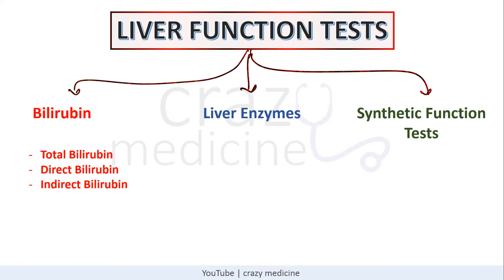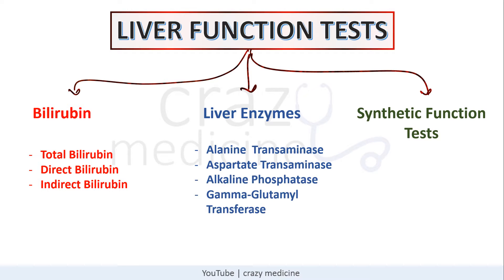Bilirubin includes total bilirubin, direct and indirect bilirubin. Liver enzymes include alanine transaminase (ALT), aspartate transaminase (AST), alkaline phosphatase, and gamma glutamyl transferase. Synthetic function tests include INR and serum albumin. We will see details of each test in subsequent slides and also changes in these tests in different liver diseases. Do watch the full video for complete understanding.